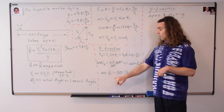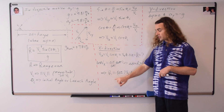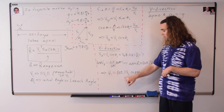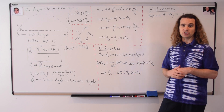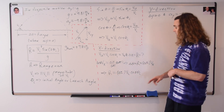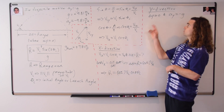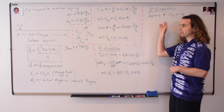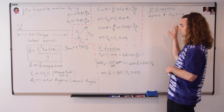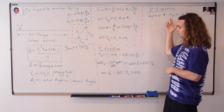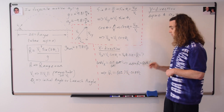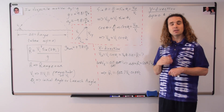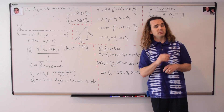Now we have an equation for range in terms of the change in time, the initial velocity, and the initial launch angle. Let's pause, switch to the y direction, and solve for change in time, then substitute what we get back into this equation for range. Billy, could you please do that?